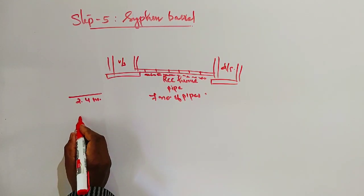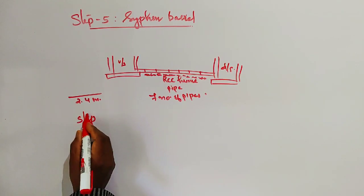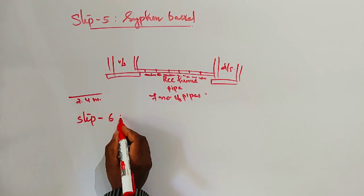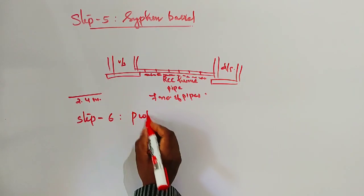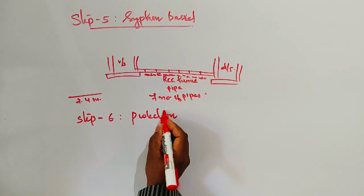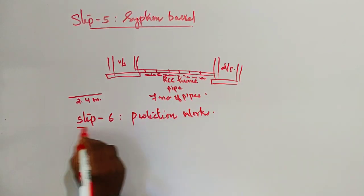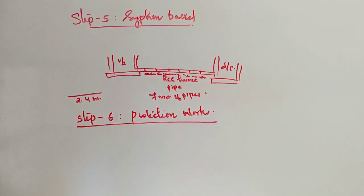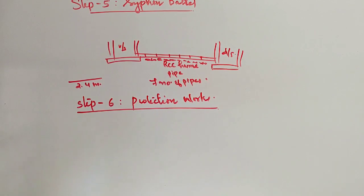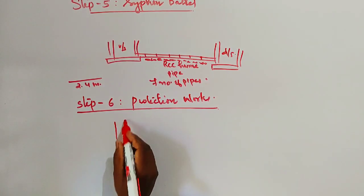The next step is step number 6: protection work. This includes protection for both the upstream side and downstream side. That is, both the upstream well and downstream well need to be protected.